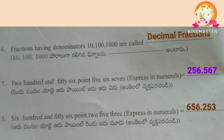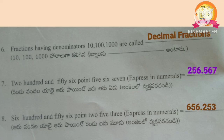Fractions having denominators 10, 100, or 1000 are called decimal fractions. Express 256.567 in numericals: the numerical form is 256.567. Express 656.253 in numericals: the numerical form is 656.253. Thank you for watching.